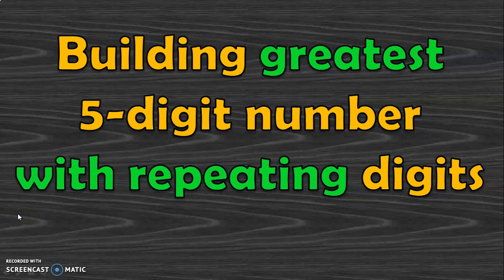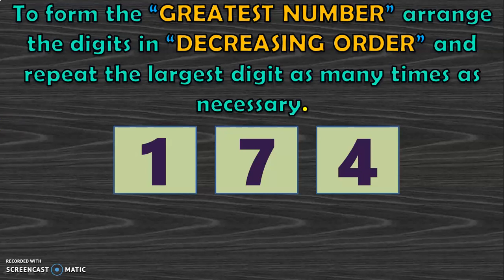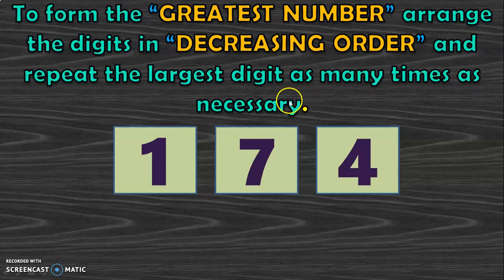Hope you have understood how to build the greatest and smallest number without repeating the digits. Now let us see how to build the greatest 5-digit number by repeating the given set of digits. To form the greatest number, arrange the digits in decreasing order, and then repeat the largest digit as many times as necessary.